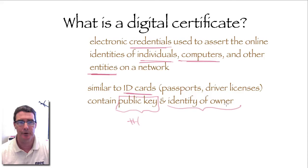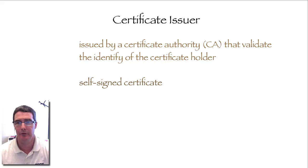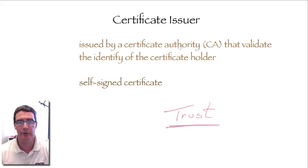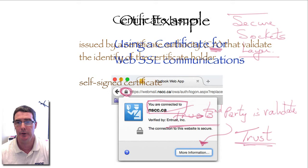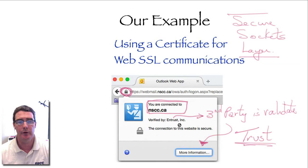Digital certificates can offer further features, and one of those is trust. You can have a certificate that is issued by what is called a certificate authority. A certificate authority validates the identity of the certificate holder. For example, Entrust was the certificate authority validating that you're actually connected to nscc.ca — not any hacker site that's going to get your information.